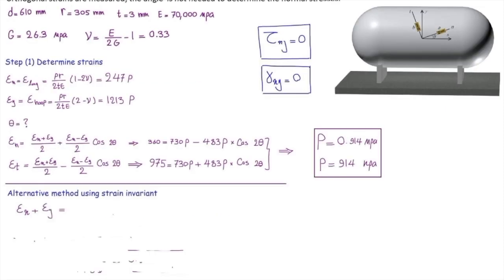So, epsilon x plus epsilon y is equal to epsilon n plus epsilon t. Epsilon x is 247p, epsilon y is 1213p. Epsilon n and epsilon t are given. So, there is just one unknown.